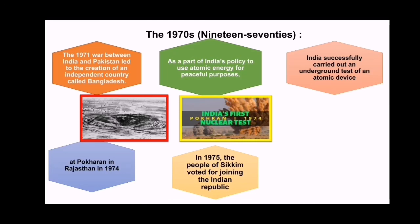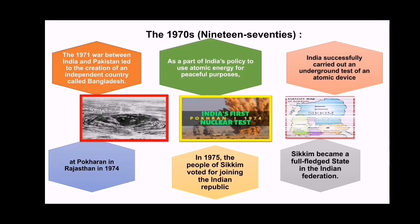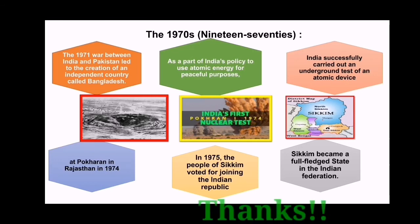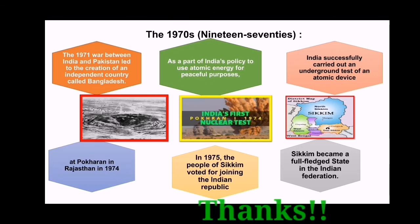Another event happened in 1975: the people of Sikkim voted for joining the Indian republic, and Sikkim became a full-fledged state in the Indian federation. These were the events of the 1970s. We will learn more in the next session. Please go through the lesson along with this PPT. Goodbye, children.